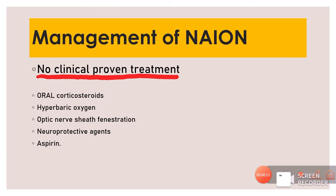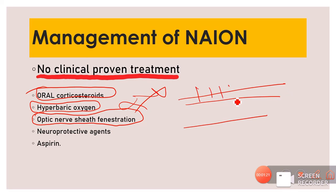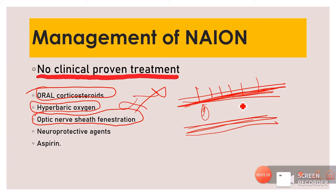Management of non-arteritic AION: there is no clinically proven treatment. Oral corticosteroids showed no benefit. Hyperbaric oxygen did not show promising results. Optic nerve sheath fenestration — aimed at reducing sub-pial and subdural pressure — also failed. Neuroprotective agents and aspirin have been tried but also do not show promising results.